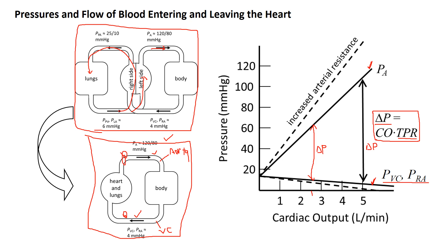For a normal cardiac output of around 5 liters per minute, we have a normal aortic pressure of around 100 mmHg and venous pressure of around 5 mmHg. It's conceptually important to realize that these curves have nothing to do with the heart — they're telling us about how the vasculature behaves. We could replace the heart and lungs with an electric pump hooked up to the vena cava and aorta and observe this same gross behavior. As we increase the pump rate, outlet pressure increases and inlet pressure decreases.